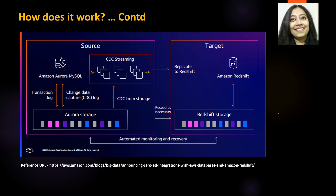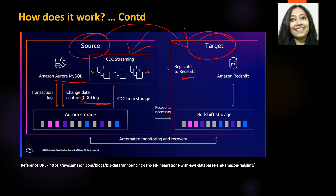This diagram is specific to Amazon Aurora MySQL as the source, with Redshift as the target. You can see a transactional log and a CDC log, and most importantly, CDC streaming. Every time a change happens in Aurora MySQL, the CDC streaming between MySQL and Redshift triggers a near real-time replication to Amazon Redshift. The initial sync will take about 25 minutes, but then the continuous updates will happen every time a change is made, enabled by CDC streaming.